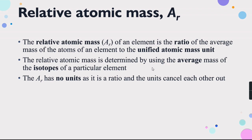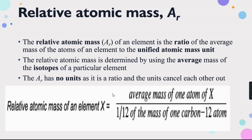Relative atomic mass is determined by using the average mass of the isotopes of a particular element. This is important for the next steps. Ar has no units because it is a ratio — the same quantities appear on both sides and the units cancel each other out. To calculate Ar for any element X: divide the average mass of one atom of that element by one twelfth of the mass of a carbon-12 atom.